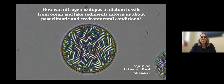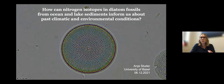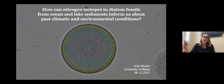Why is it interesting to study the nitrogen cycle of the ocean and of lakes? In the ocean, bioavailable nitrogen controls marine productivity and therefore the capacity of the ocean to sequester CO2 in the interior. In lakes, a large amount of bioavailable nitrogen can cause eutrophication, enhanced algal blooms, and in turn oxygen loss.